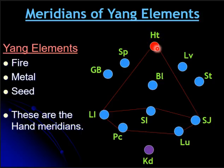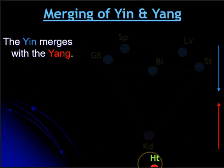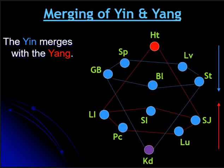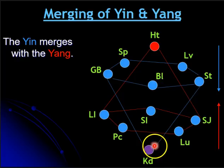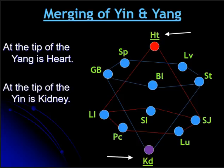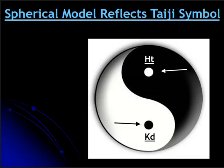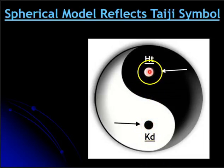So you have the yang elements and the yin elements — they're going to merge. You have the yang coming up and the yin coming down. This goes back to the ancient Chinese principle of the yang and yin essences embracing, and this forms the great yin-yang symbol. You'll see that at the tip of one cone is the kidney and at the other tip is the heart. When you look at the tai chi symbol — which is the yin-yang symbol — these dots in the symbol actually represent the heart and the kidney.